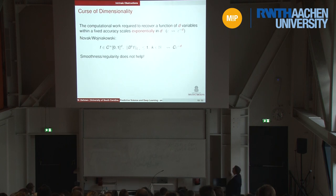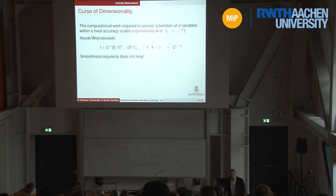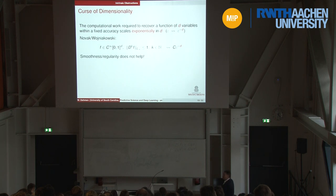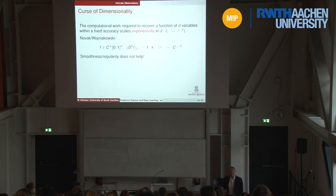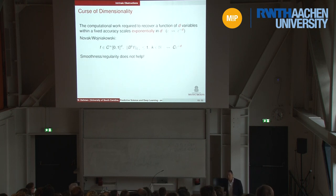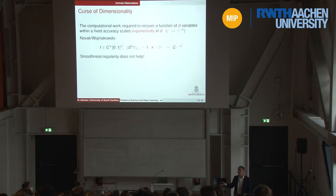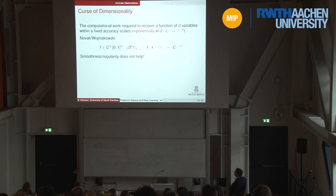It says: if you try to recover a function that lives on a cube in d dimensions, it's very smooth — it has infinitely many derivatives, which is usually a sign of good approximability — and even if these derivatives are all bounded by 1, the amount of work or information you need to recover such a function at epsilon accuracy is epsilon to the minus d. This is the curse of dimensionality. It means your work scales exponentially in the number of variables, not in the size of the discrete problem. Smoothness or regularity doesn't help in high dimensions. All what you have learned about high-order splines or high-order finite elements working very well — this doesn't play any role anymore.